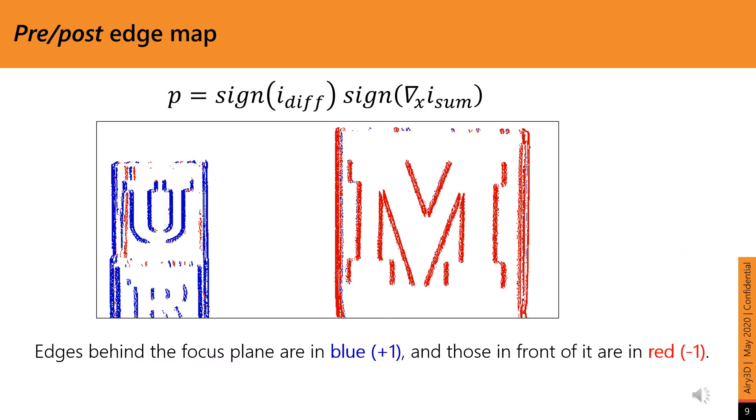We can use this relationship between the signs of the diff and the gradient to define a pre-post edge map, which can tell us if the edges are behind the plane of focus or in front of it. In the pre-post edge map, we define an edge to have diff and gradient responses sufficiently larger than a chosen threshold. P equals the sign of i_diff times the sign of the gradient of i_sum.